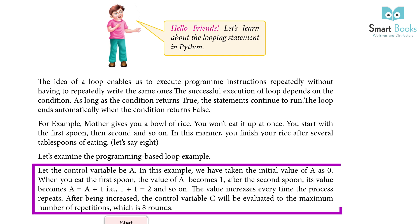Let's examine the program-based loop example. Let the control variable be 'a'. In this example, we have taken the initial value of 'a' as 0. When you eat the first spoon, the value of 'a' becomes 1. After the second, its value becomes a = a + 1, so 1 + 1 = 2, and so on.